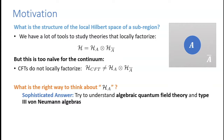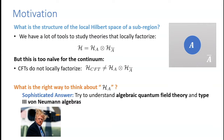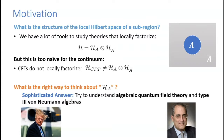Continuum conformal field theories do not have a Hilbert space that locally factorizes, so what is the right way to think about some Hilbert space H_A for a sub-region? The sophisticated answer is to understand algebraic quantum field theory and type-3 von Neumann algebras. But I like to think of myself as a simple person with simple tastes, and surely I don't need such heavy qualifications to understand the local Hilbert space.